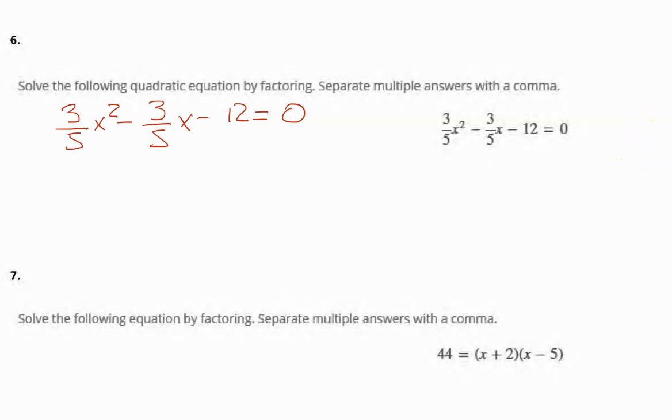Now, for number 6, this is sort of an old friend. Let's change colors here. We want to get rid of the fractions. So, what will we multiply every term by? Well, the common denominator is 5. So, here, the 5s will cancel out. You just get 3x squared. Again, the 5 will cancel out and you get 3x. Now, the 5 is not going to cancel out here. So, you get negative 60 equals 0.